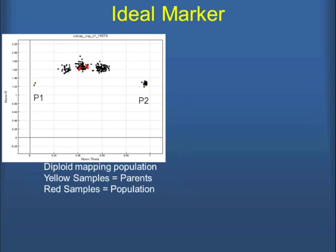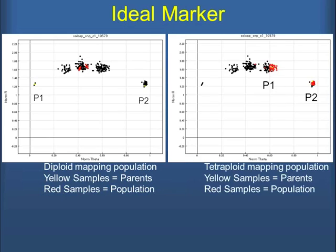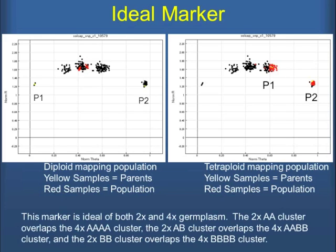Looking at our data here, Candy feels that these are some ideal SNP markers in terms of the way that they're sorting into the different genotypic classes. You've got to be really careful on handling the data.